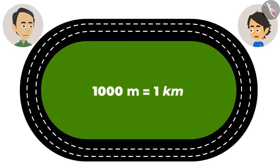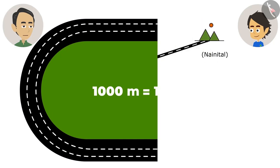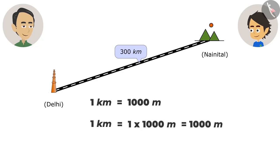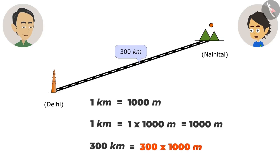Then one kilometer is a lot because the people running in it were very tired. And Nainital is 300 kilometers away. As it is so far, we are going by train. If one kilometer is equal to 1000 meters, how many meters away is Nainital? It is very easy to calculate. Multiply by 1000 to convert kilometers into meters. To convert 300 kilometers into meters, multiply 300 by 1000. The answer is 3 lakh meters. It means we will go 3 lakh meters away.